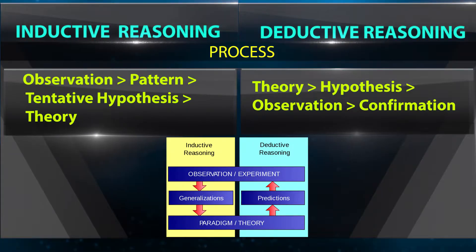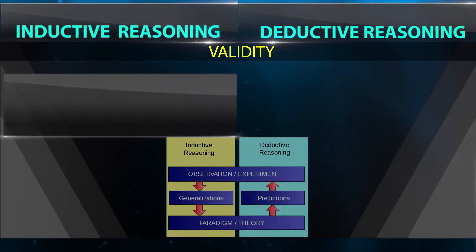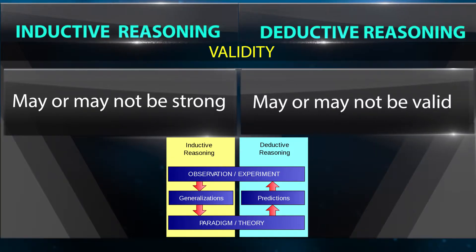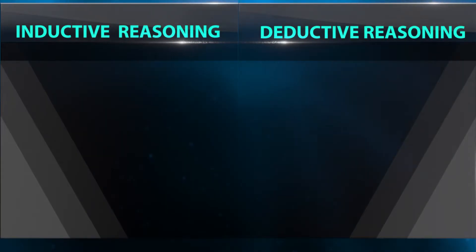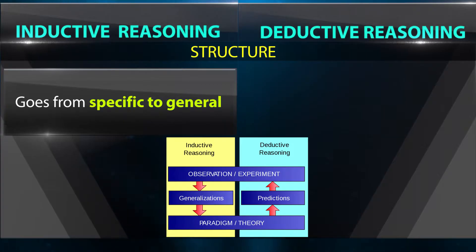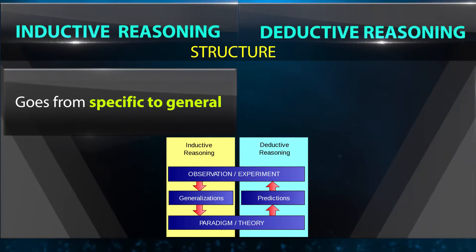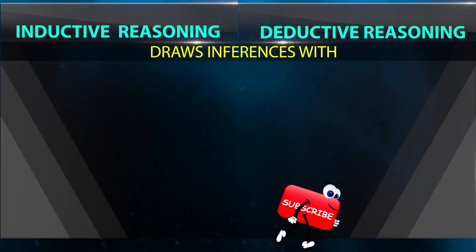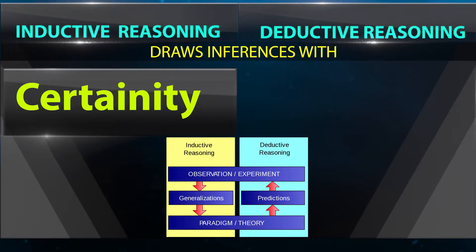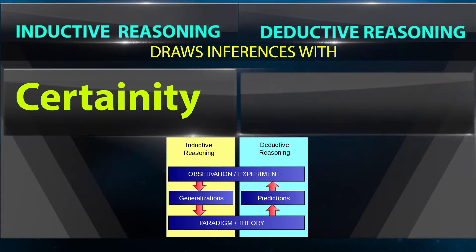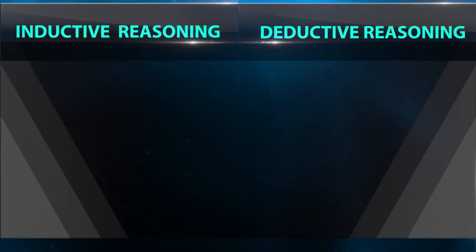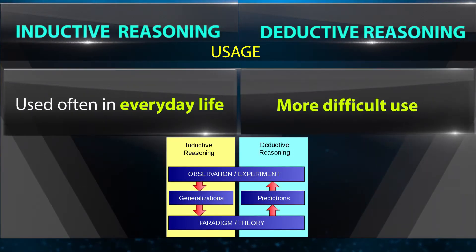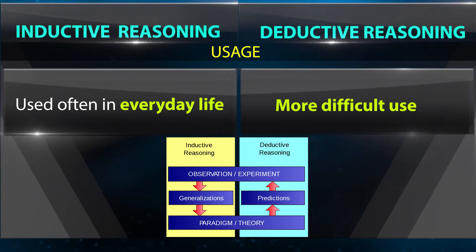Deductive reasoning moves from hypothesis to observation to confirmation. Regarding validity, inductive reasoning may or may not be strong, whereas deductive reasoning may or may not be valid. In terms of structure, inductive reasoning goes from specific to general, whereas deductive goes from general to specific. Inductive reasoning draws inferences with probability, whereas deductive reasoning offers certainty. Inductive reasoning is used often in everyday life, whereas deductive reasoning is more difficult to use.